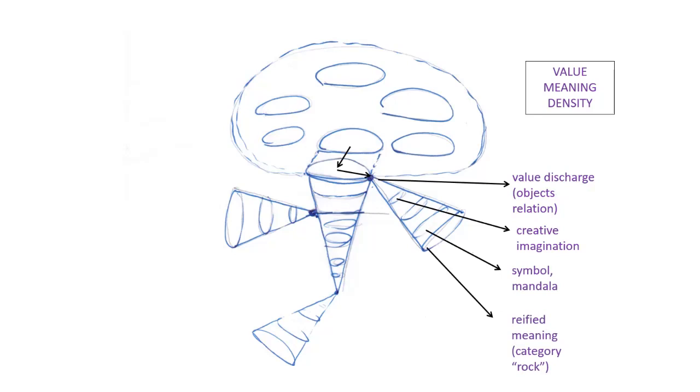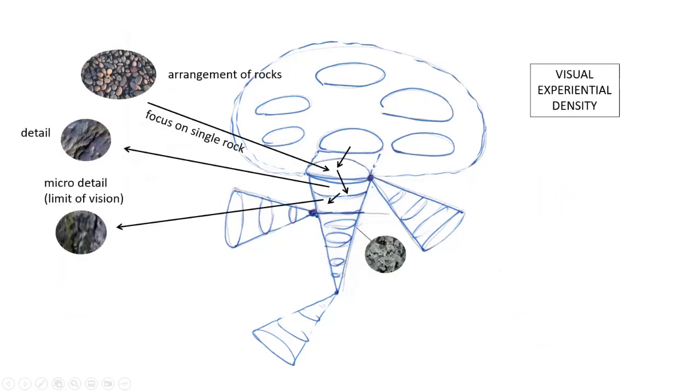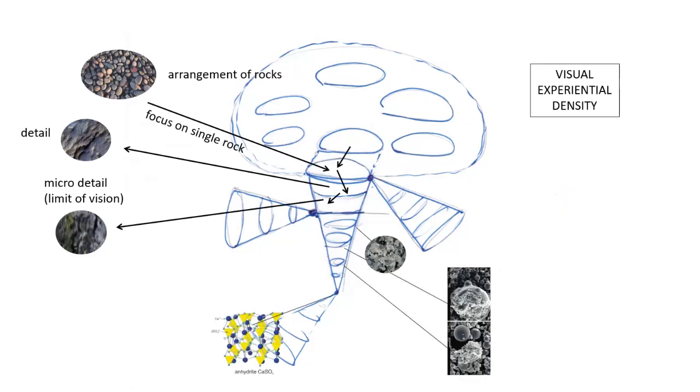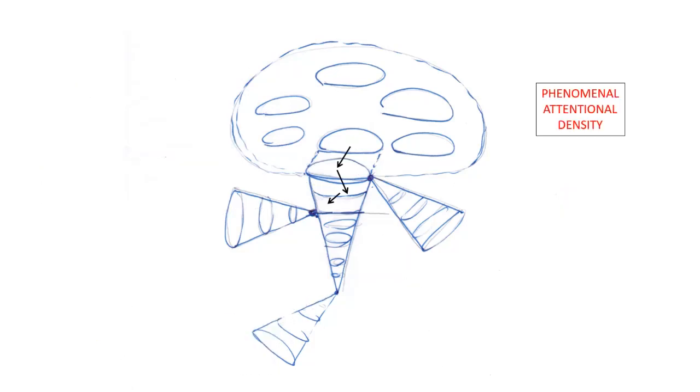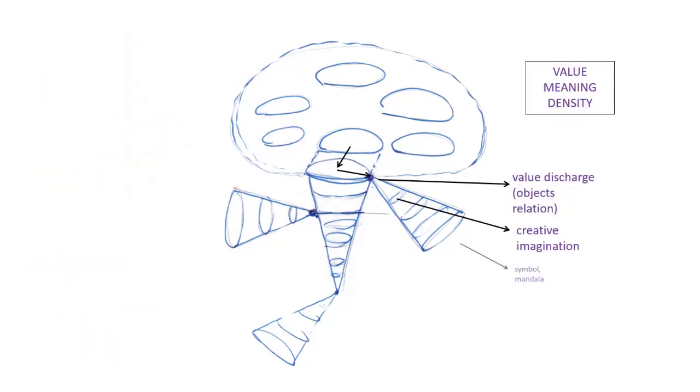We can get into more symbol or mandala type of meaning density. And then very few Westerners do this, but we can start to categorize the meaning. We can start to take that meaning and push it up the hierarchy of cognition and start to reify the category rock itself. It's an abstraction. So it's not that this rock is meaningful, but this is the meaning that rocks have. This is moving up the cognitive hierarchy.